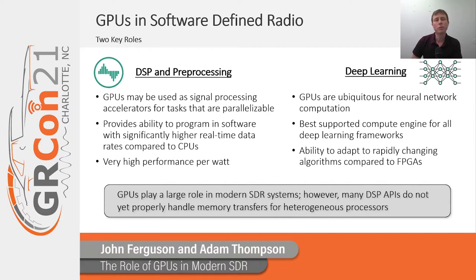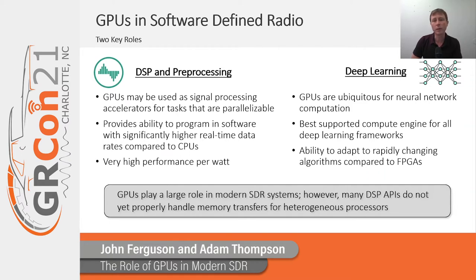GPUs tend to be used for two key roles as processors for software-defined radios — you can lump them into two buckets. One is DSP and preprocessing, and the other is deep learning applications. In terms of DSP and preprocessing, they're primarily used as accelerators to execute highly parallelizable DSP tasks — things like FFTs. The reason people really like using GPUs for this is because you're able to get speedups typically associated with hardware accelerators like FPGAs, but you are actually writing software, so it's easily adaptable, easily changeable, and much easier to program than something like an FPGA.